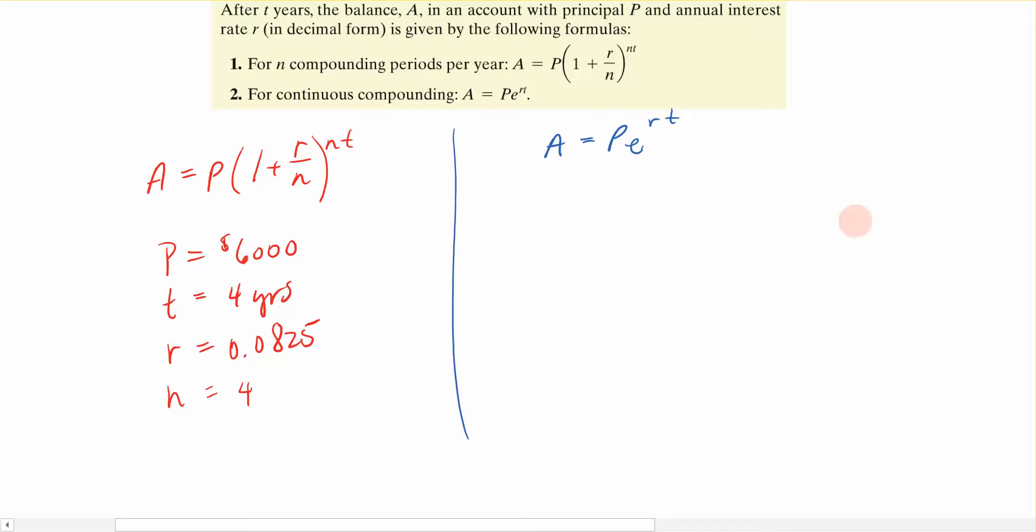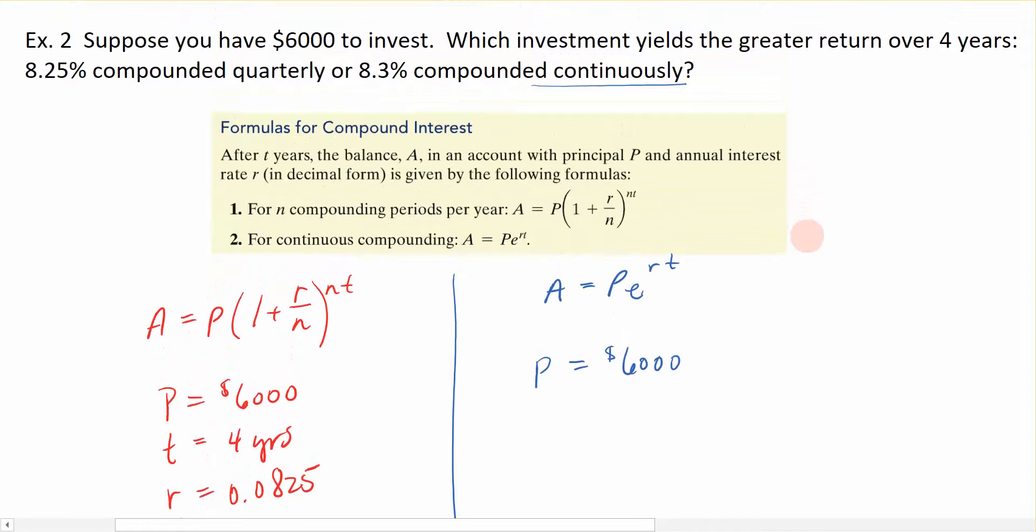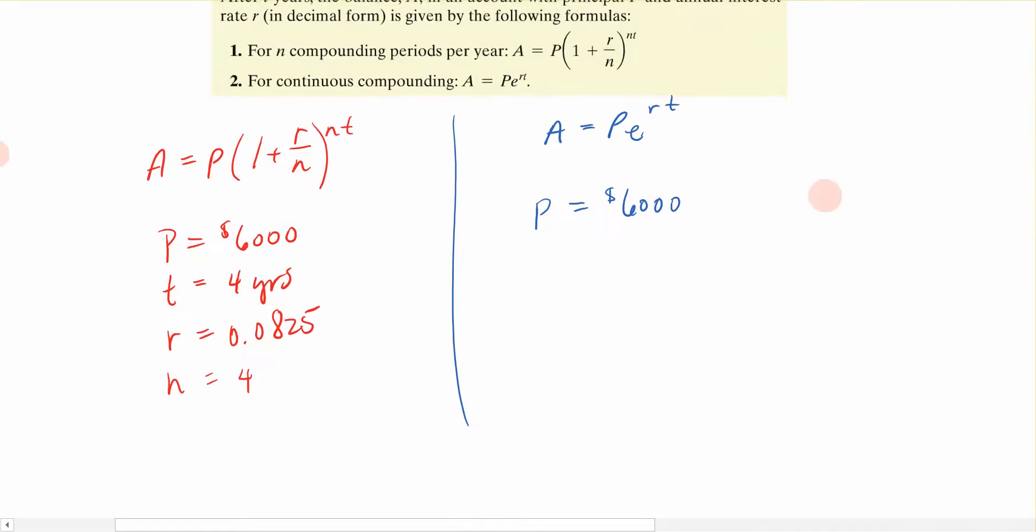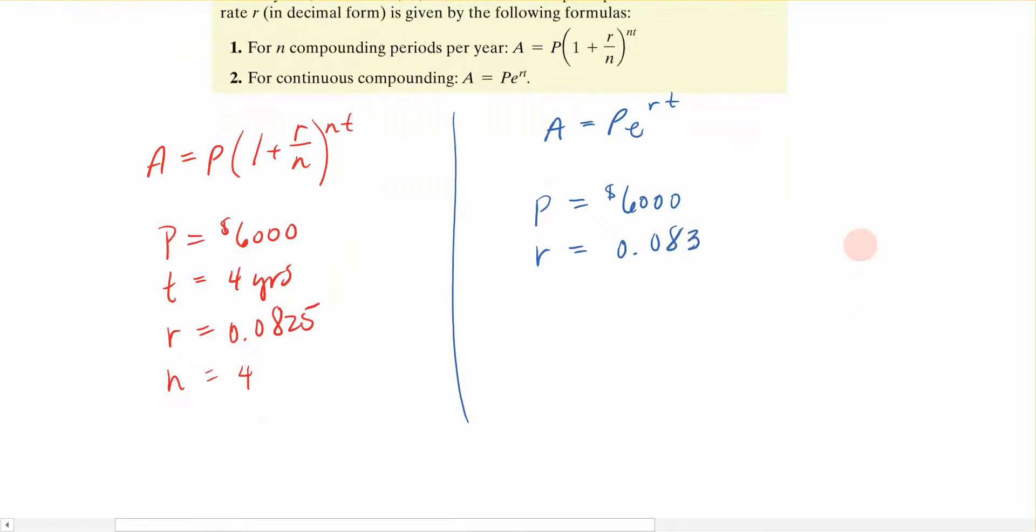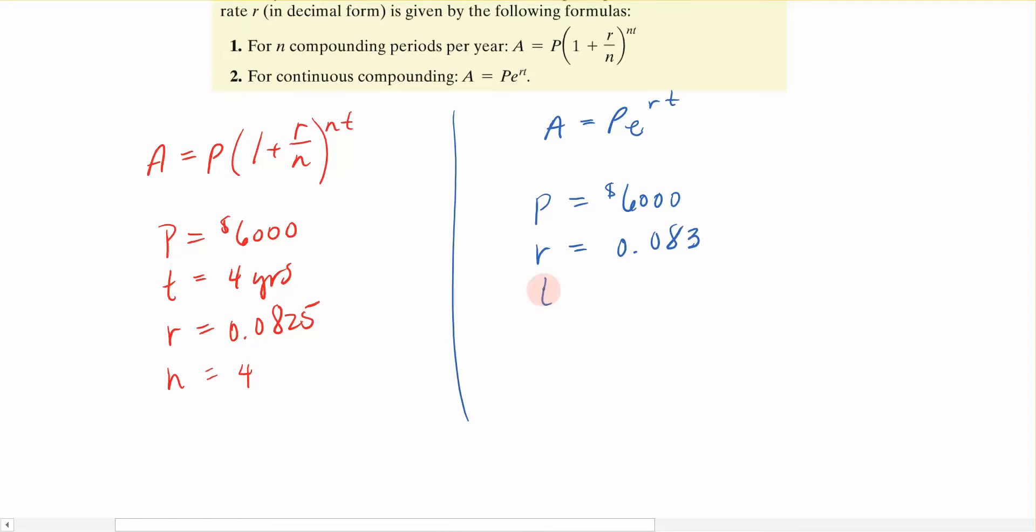For this formula, what I need again would be the principal investment of $6,000. I have an interest rate of 8.3%, so R is equal to .083. And I am still investing it over four years, so T is four years.